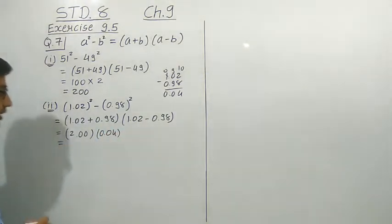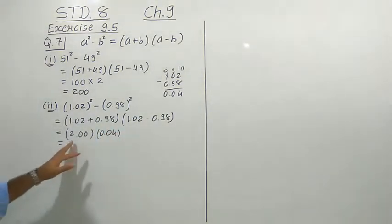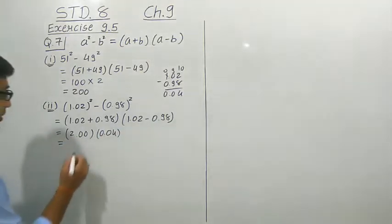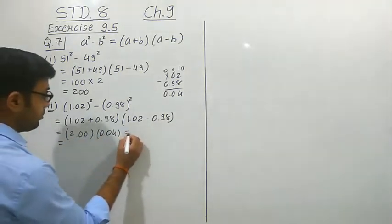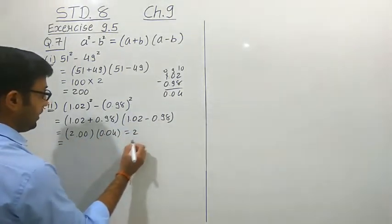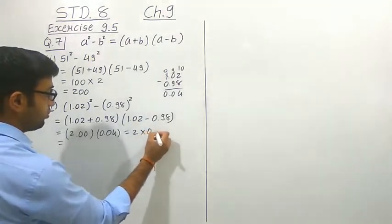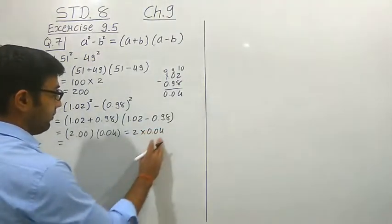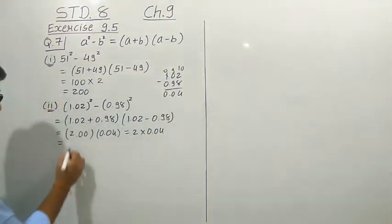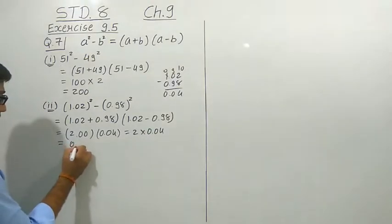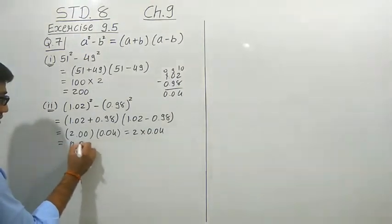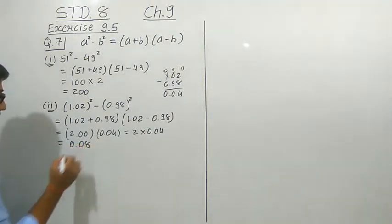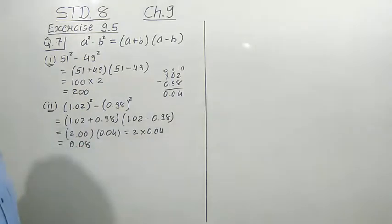The final answer is 2 multiplied by 0.04. We know that 4 twos are 8, so our answer is 0.08.